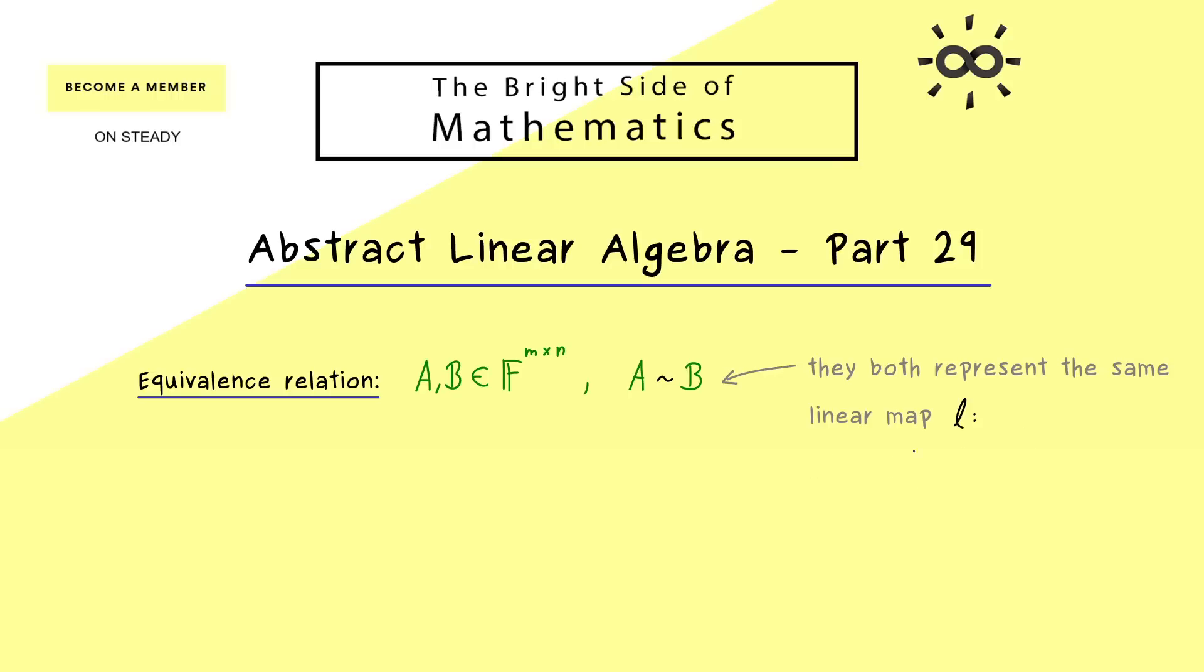So the linear map we can call L, and the vector space V has to be of dimension n. And on the other hand the codomain, the vector space W, is of dimension m. So again, equivalence means that both matrices can act as matrix representations for the linear map, just with respect to different bases of V and W.